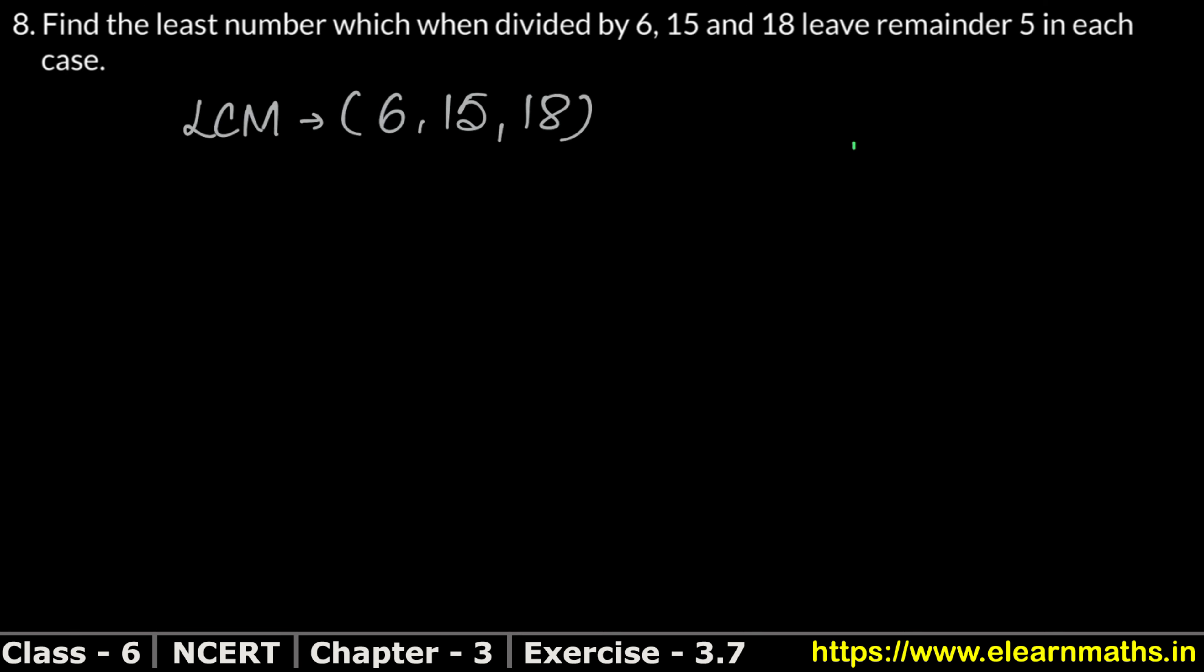So let's start LCM: 6, 15, and 18. This will go from 2: 6 and 18. 2 times 3 is 6, 15 as it is, 2 times 9 is 18. Now all these numbers are divisible by 3: 3 times 5 is 15, 3 times 3 is 9. Again 3 will go from 3. 1 as it is, 5 as it is, 3 times 1 is 3, and 5 times 1 is 5. How much is our LCM?